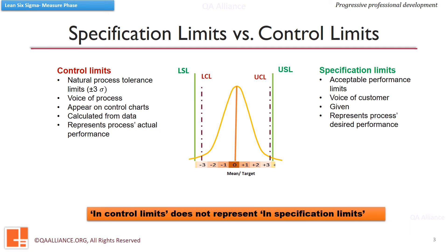It is not necessary that a process which is within control limits is within the specification limits also. A process within control limits is statistically stable process, a process within specification limits is a capable process. For a process to be capable, it has to be statistically stable.